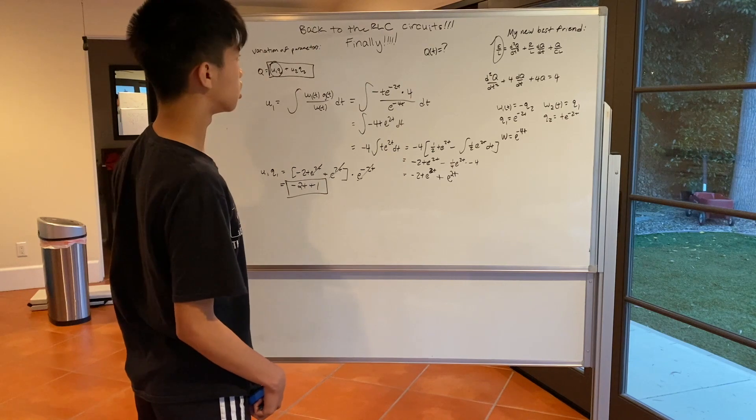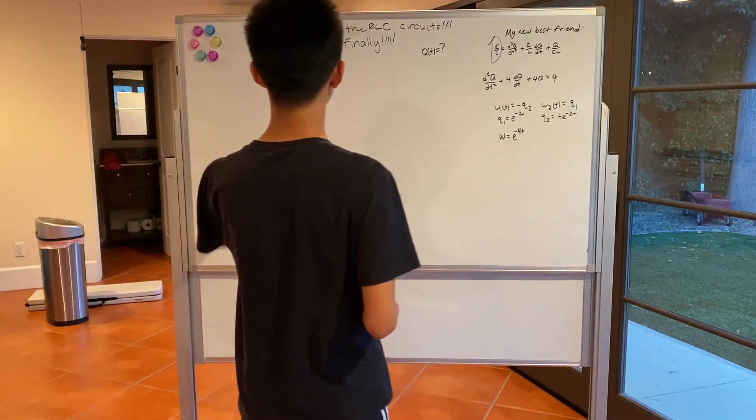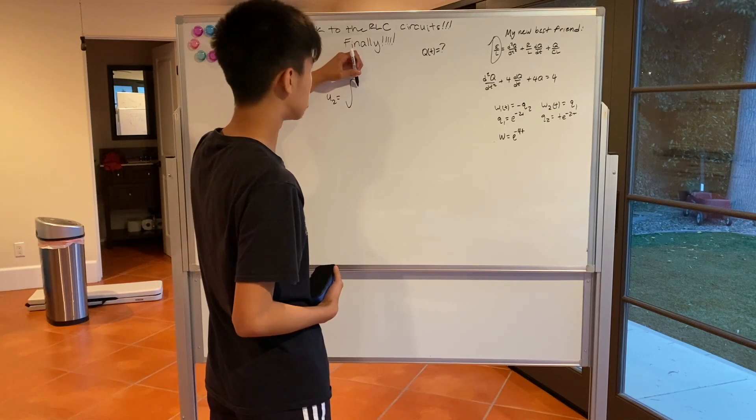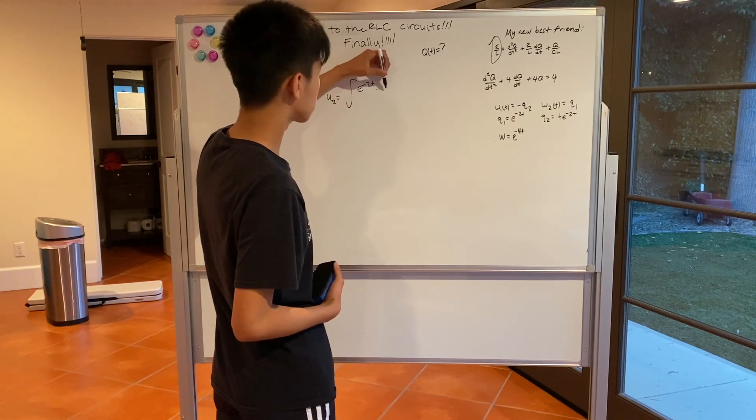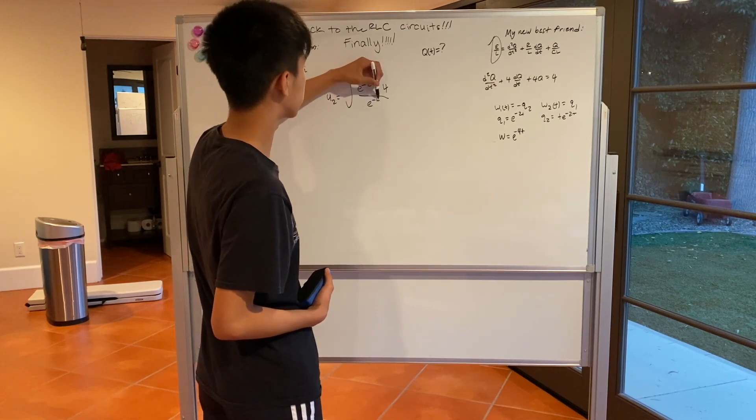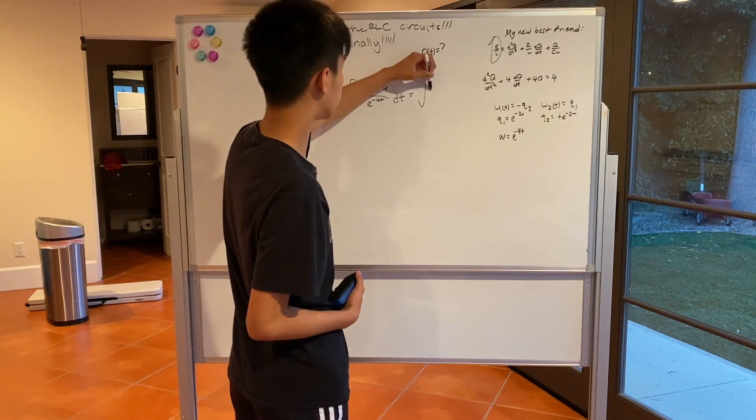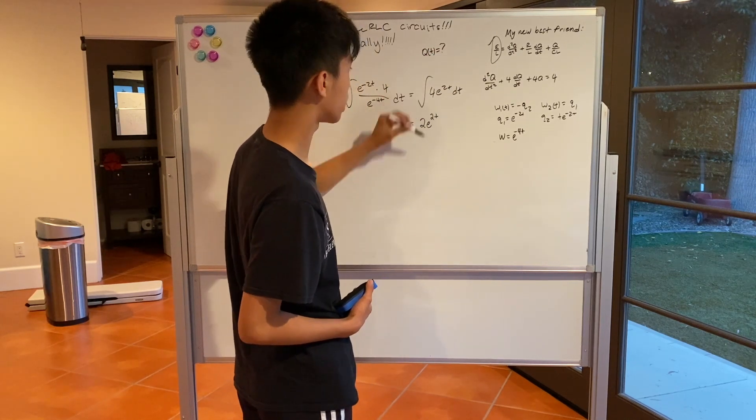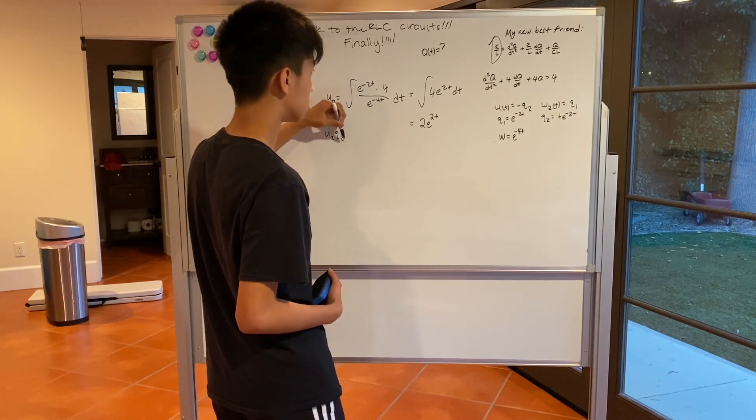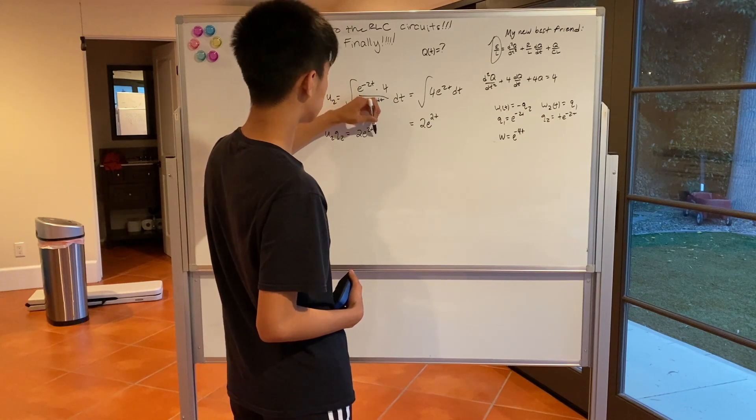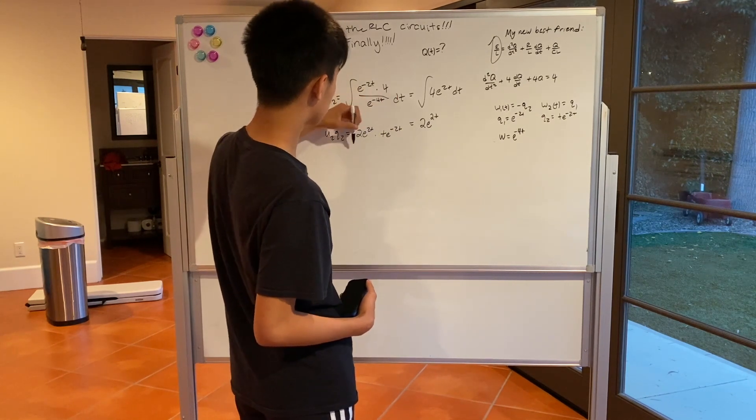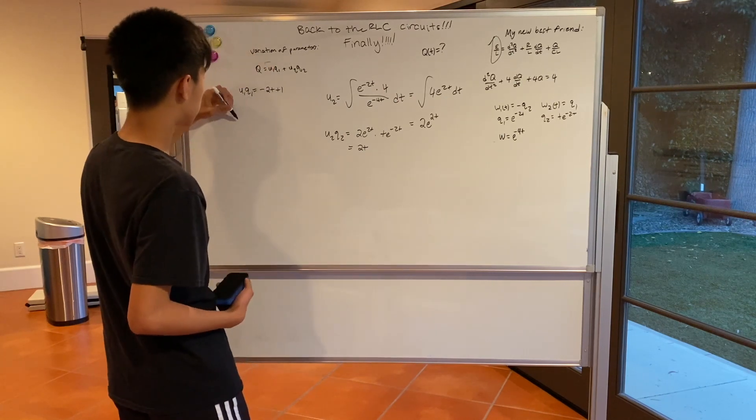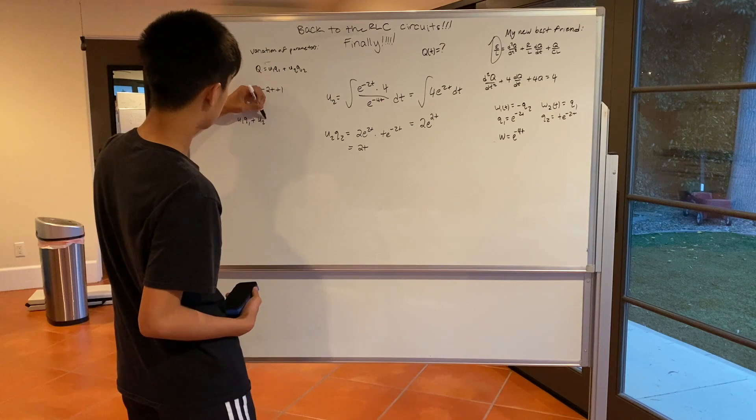Now we have to go on to our second solution. So now we can solve for U2. So that's just the integral of second Wronskian Q1, which is e to the negative 2t, times G of T, which is 4, over overall Wronskian, e to the negative 4t, dt, equals integral of 4e to the 2t dt. So that's just 2e to the 2t power. So U2 Q2 is equal to 2e to the 2t times T e to the negative 2t. So that's just 2t. So we already know U1 Q1 is equal to negative 2t plus 1. So if you add these two together, you just get 1.